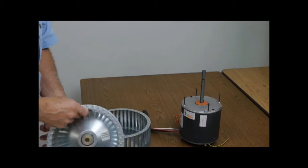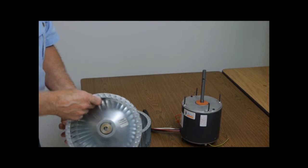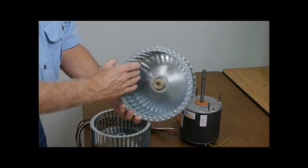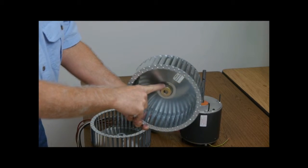On the first wheel to go on the motor, locate the notch in one of the blades. This notch will appear in line with the set screw on the wheel's hub.